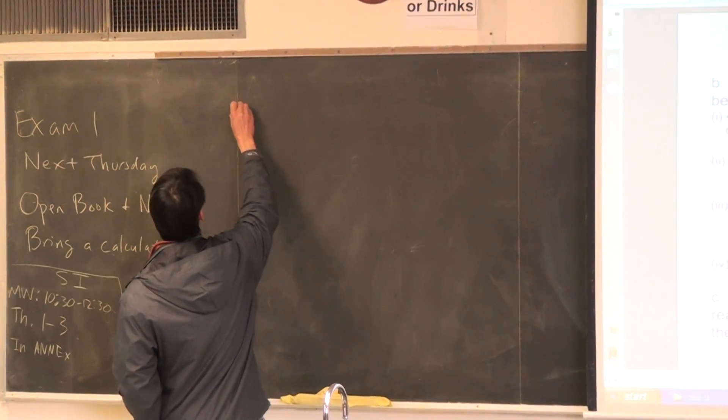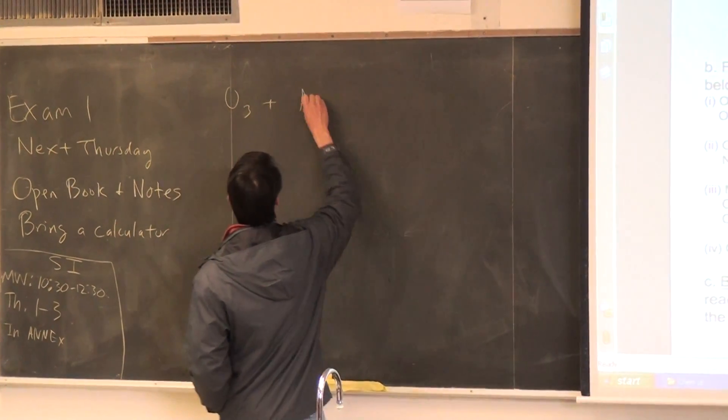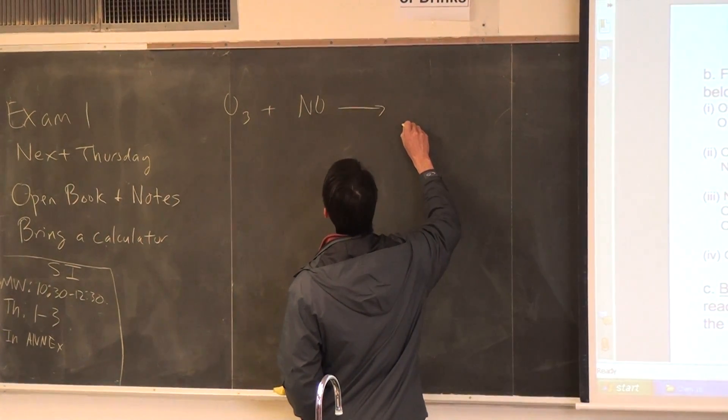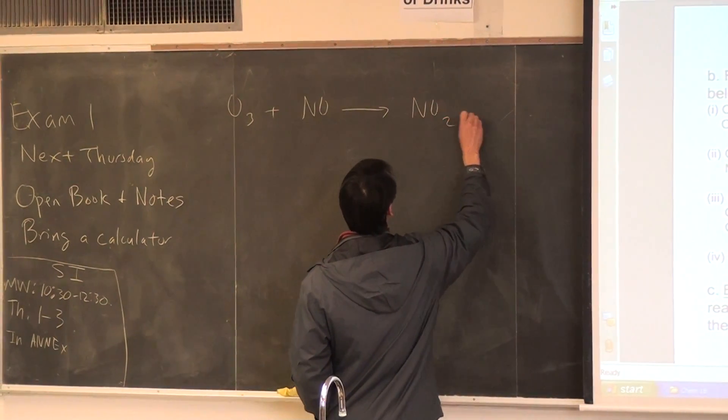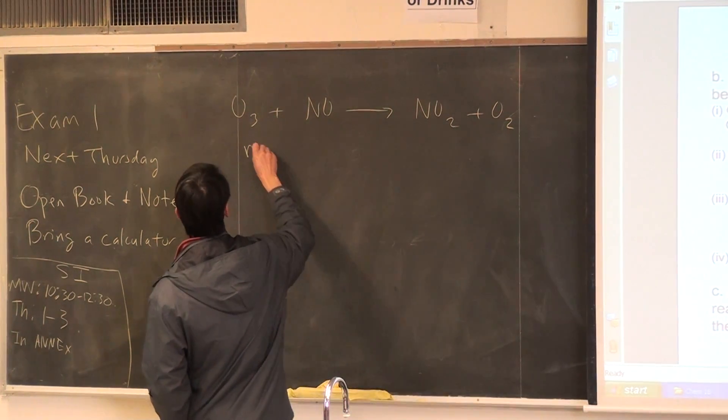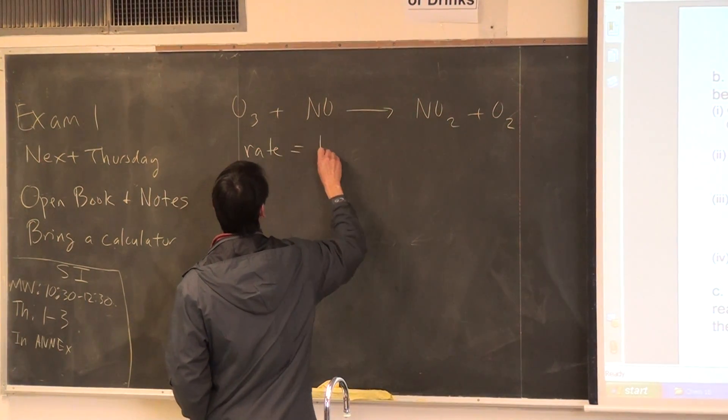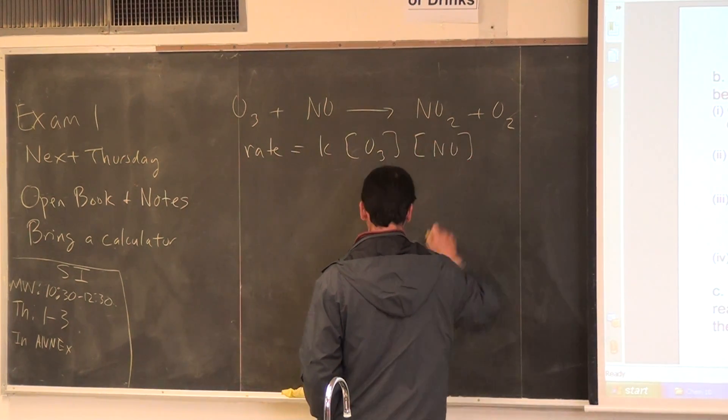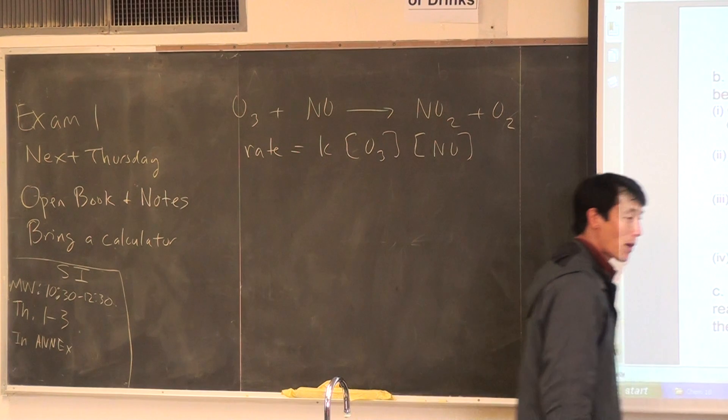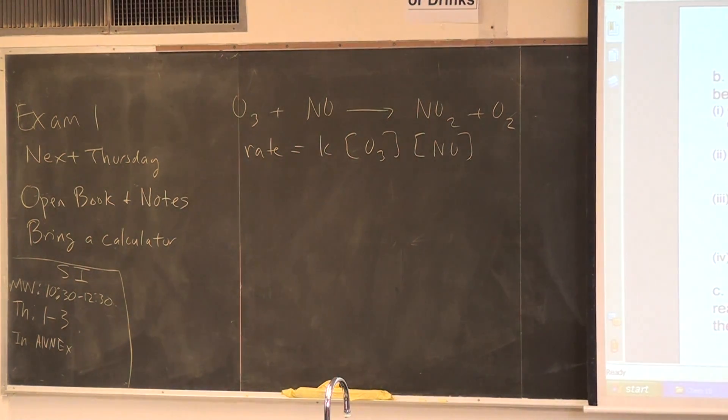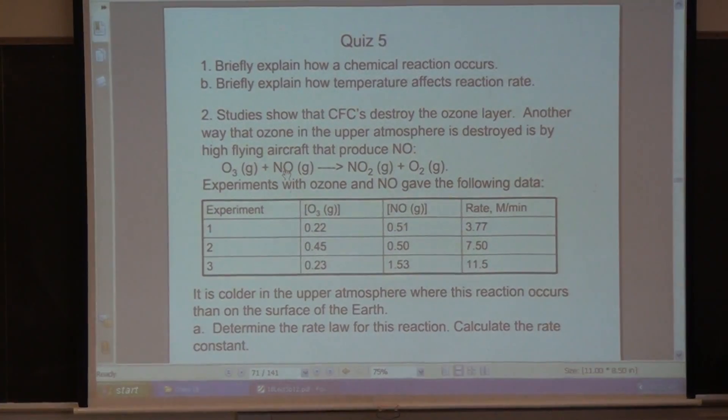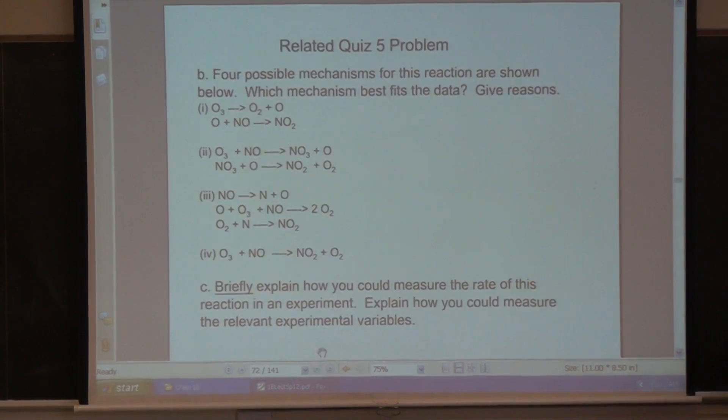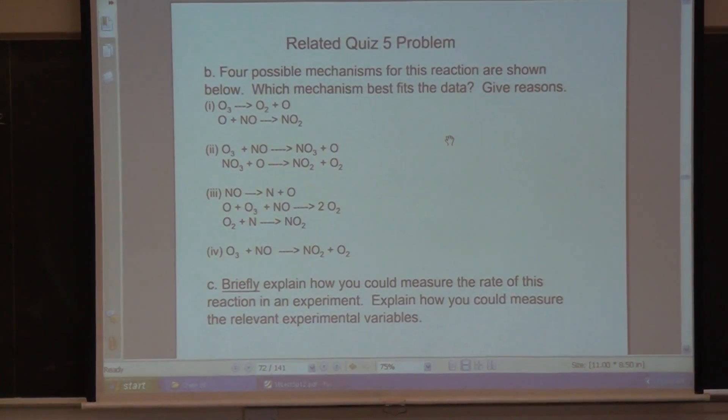So we have O3 plus NO. That gives us NO2 plus O2. And then we said the rate is equal to K times... Let's see, was it first order of each one? Do you remember what the rate law was in this reaction based on the data? So based on this, was it first order of O3 and first order of NO? Yeah.